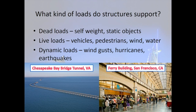Now that we know our design needs to transfer loads, we need to know what kind of loads we're designing for. Structures support three kinds of loads: dead, live, and dynamic. Dead loads are any loads that aren't moving, like stationary objects and the self-weight of all the structural components. Live loads are moving loads, like people, cars, water, and wind. Dynamic loads are extreme loads from earthquakes or hurricanes.